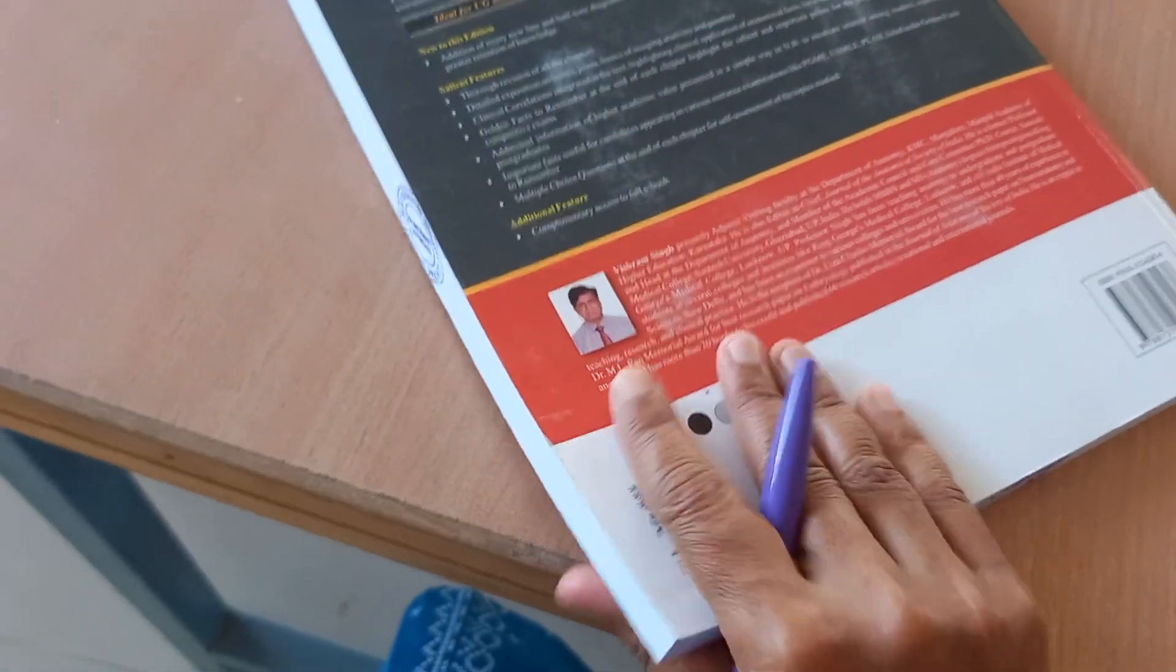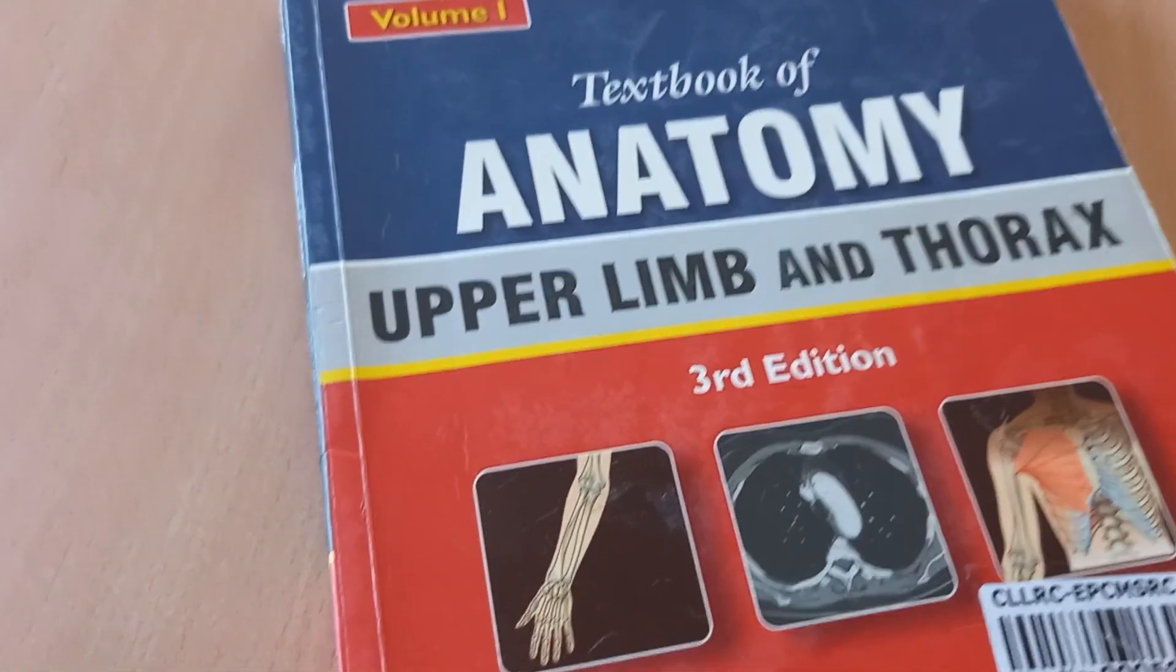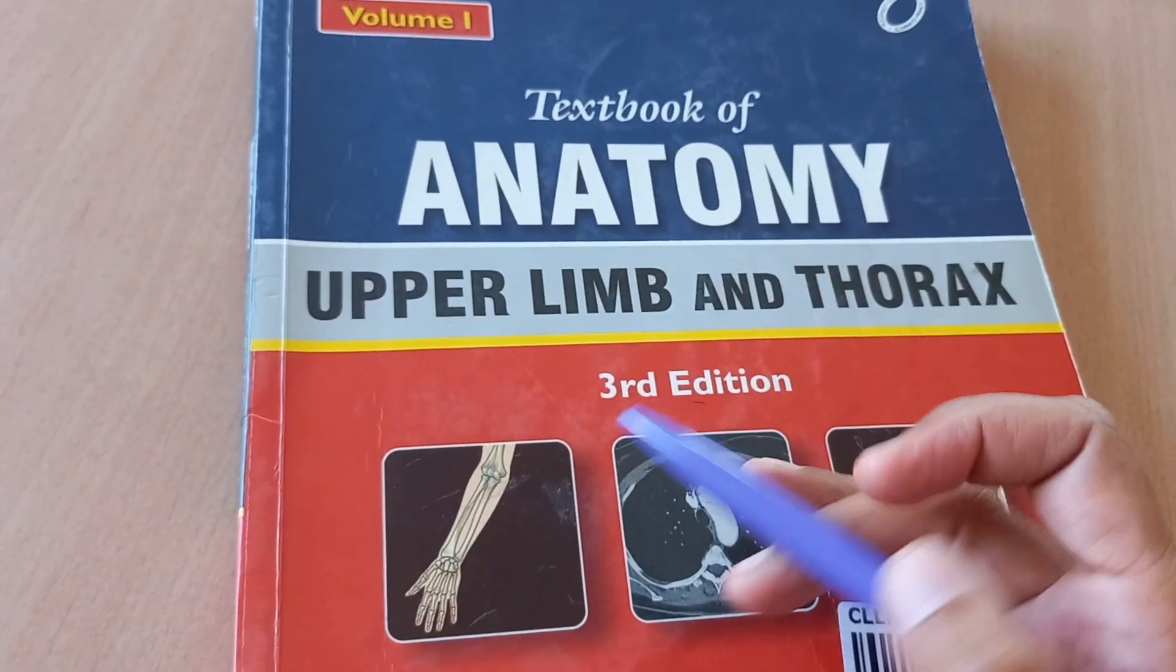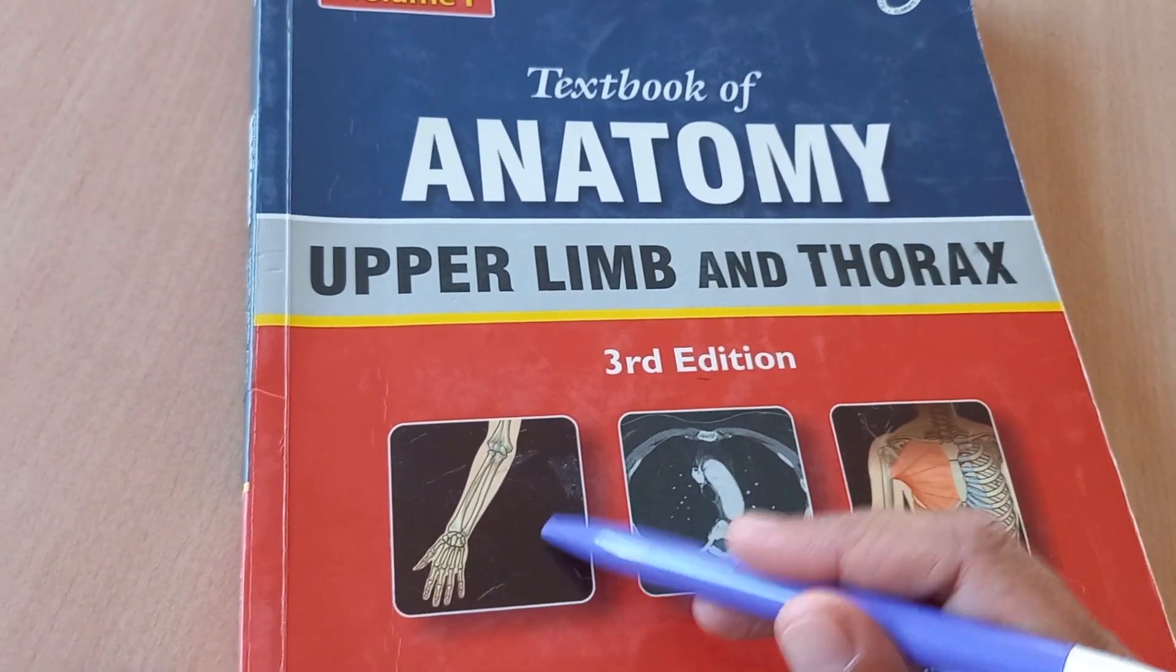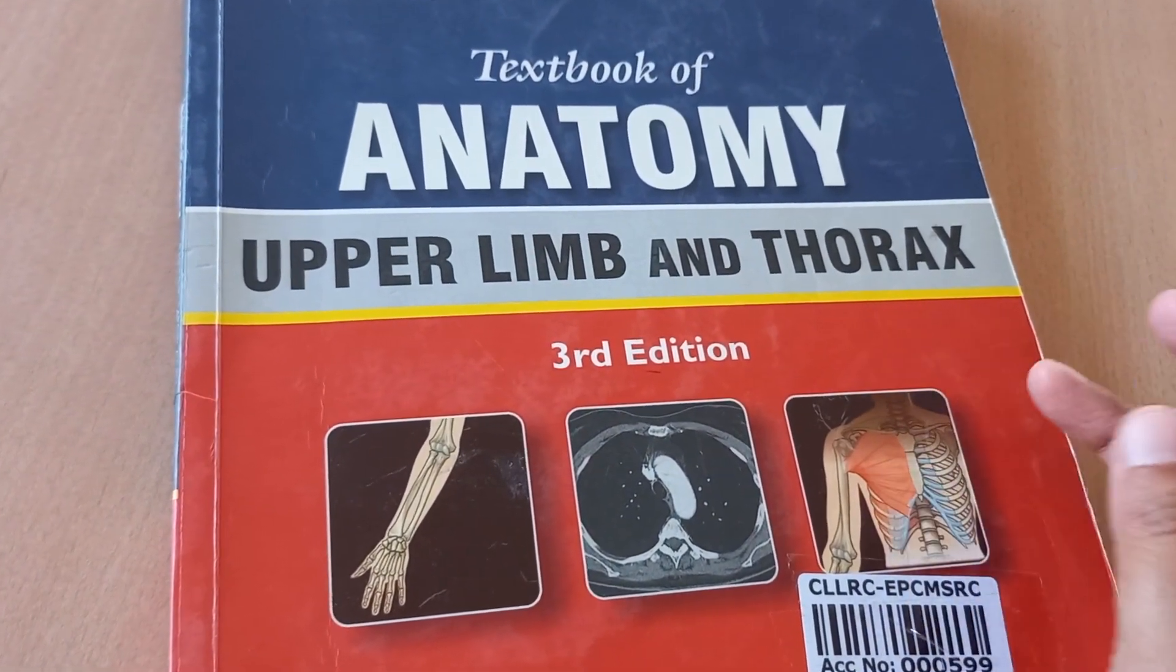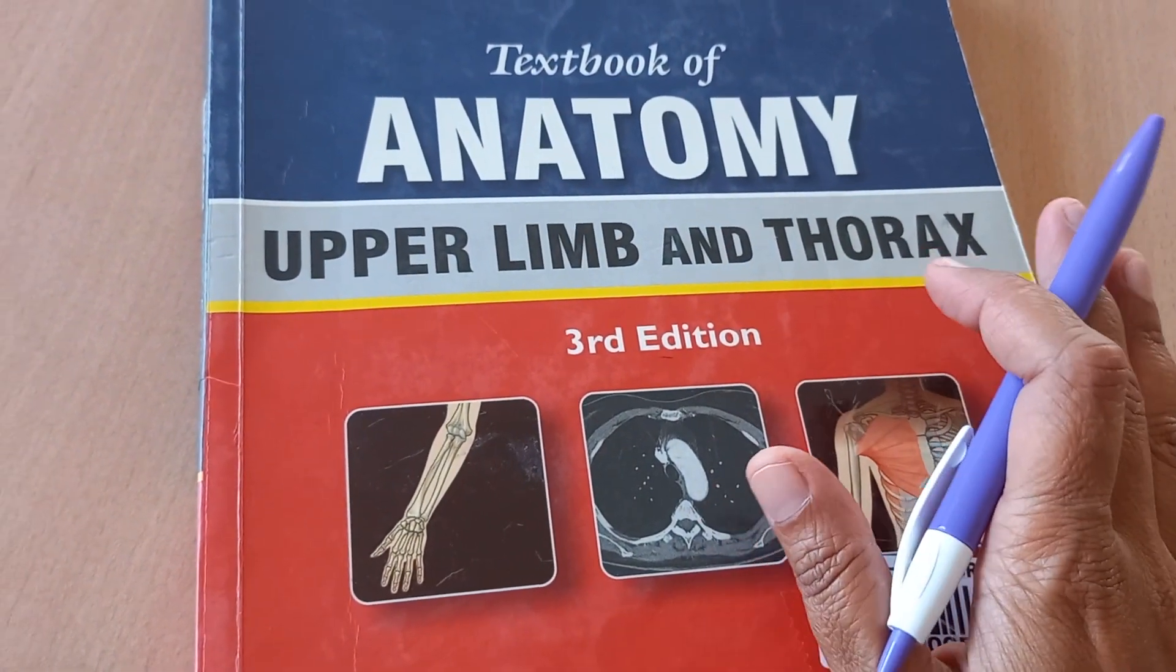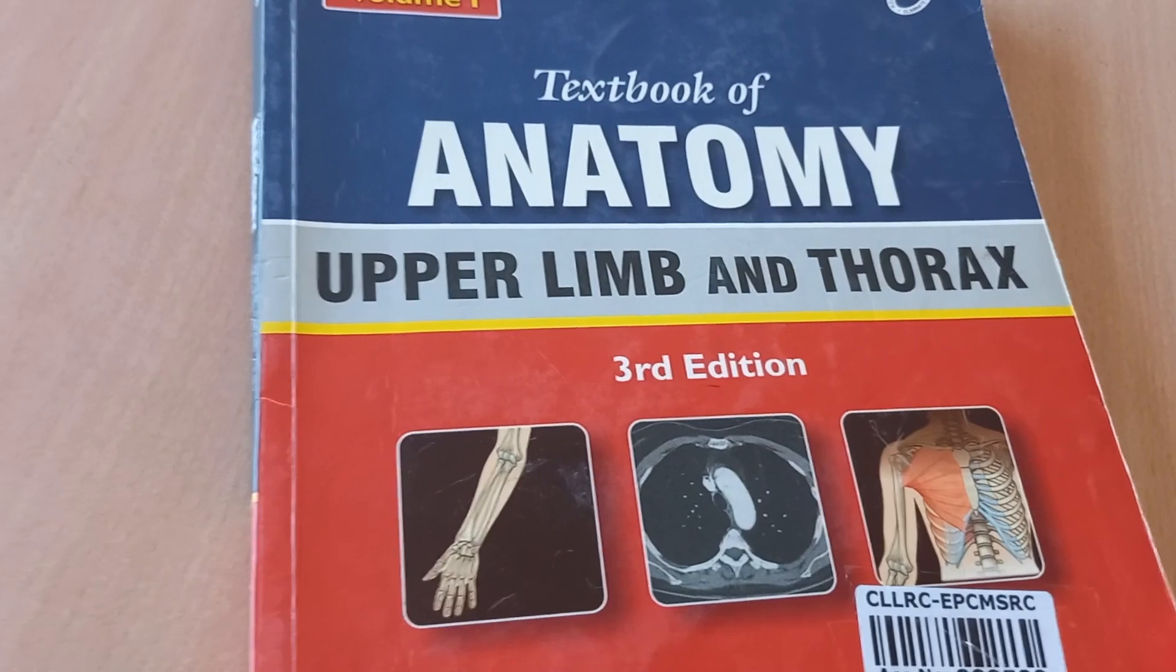So we have looked at the general anatomy book. So it is this thick. So we have covered this book. Now let's move on to the next book. So now let's move on to the upper limb and thorax. That will be your left hand, right hand and your chest area, which will have important organs like what? The heart, the lungs, breast. So male and female both have breasts, that you should know.